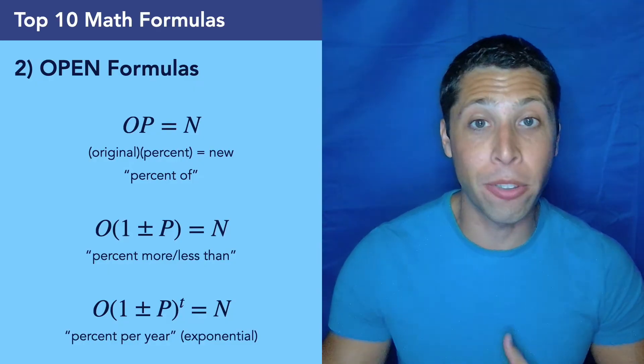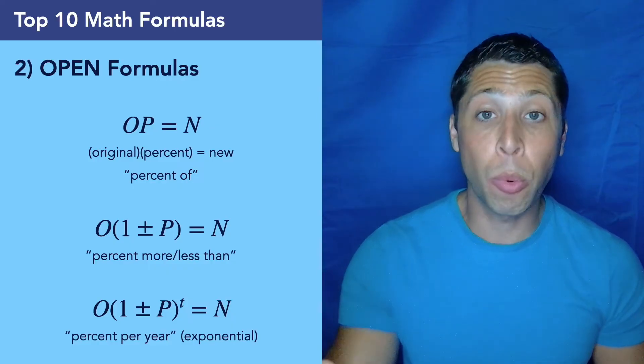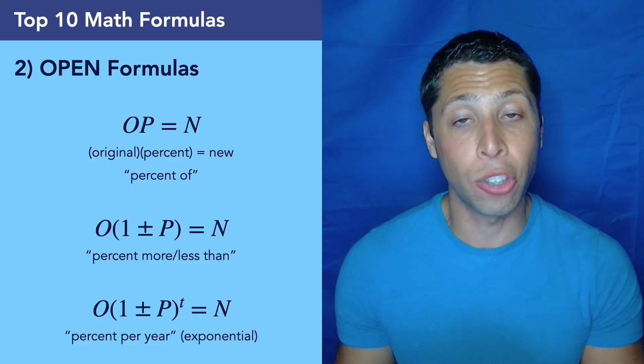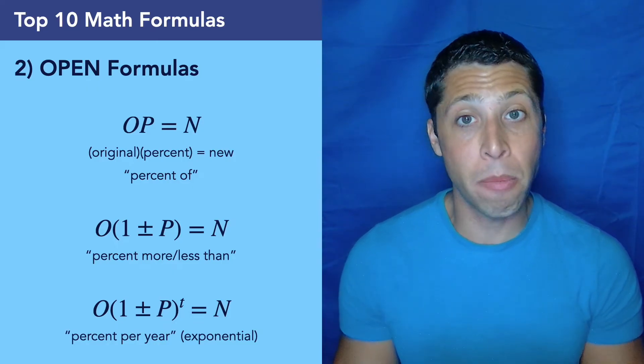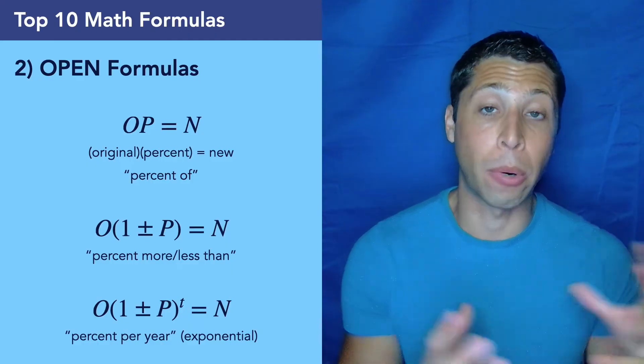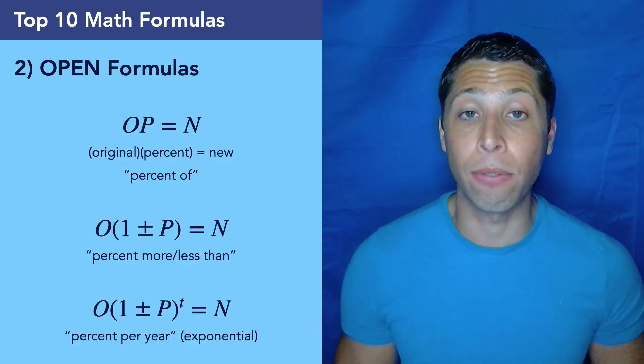But most often the SAT is going to ask us for percent change, percent greater than, percent less than. And so that's where this one plus or minus P version comes in, and that lets us incorporate this change in there. And the most important thing to remember is what is the original amount that we're taking the percent of, versus what is the new amount that we're kind of getting out of this. That's easy to confuse, but this formula forces us to think about that.